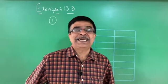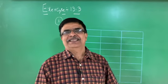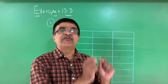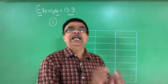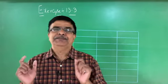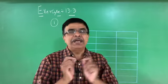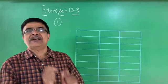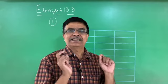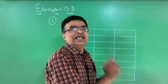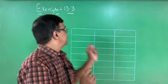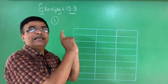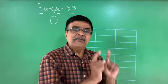We are in the chapter Statistics. In this chapter we already saw the problems of mean and mode of grouped data. Mean, median and mode are called measures of central tendencies. In today's class, Exercise 13.3 is completely based on median for grouped data.